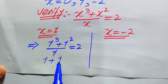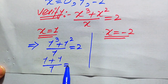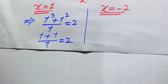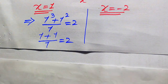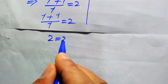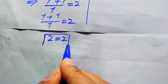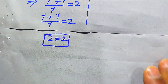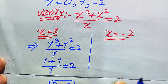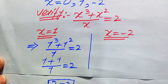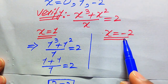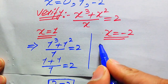We obtain 1 + 1 = 2, which equals 2. This shows both sides are equal when x = 1. Now in the same pattern we verify the second value. We substitute x = −2 into the equation: (−2)³ + (−2)² divided by −2 equals 2.